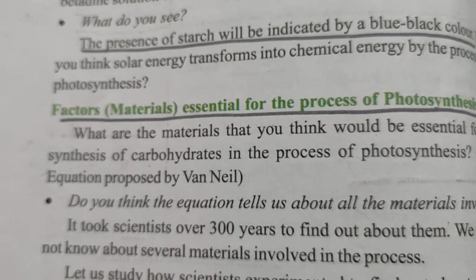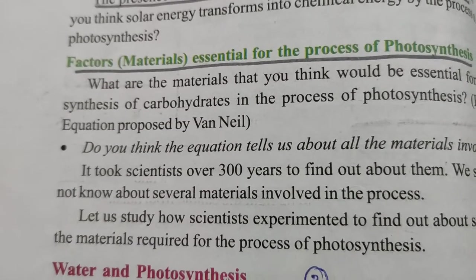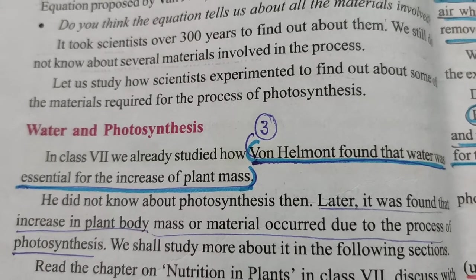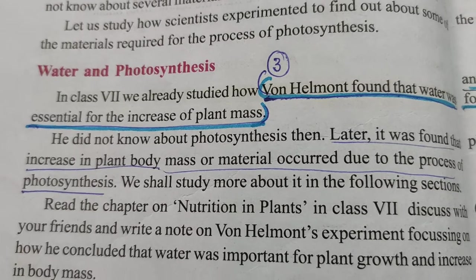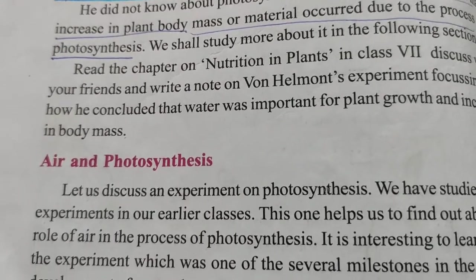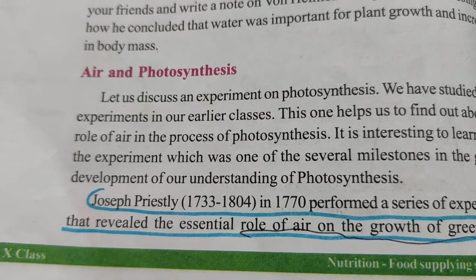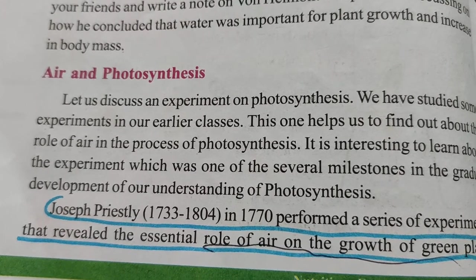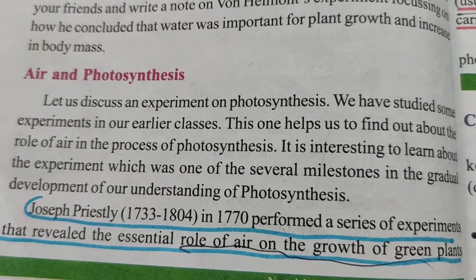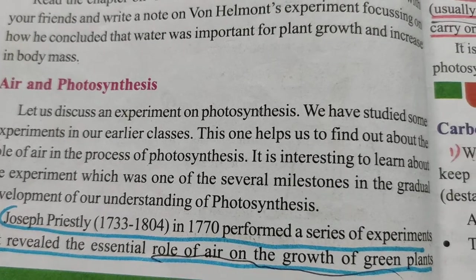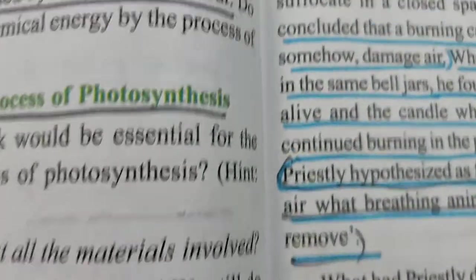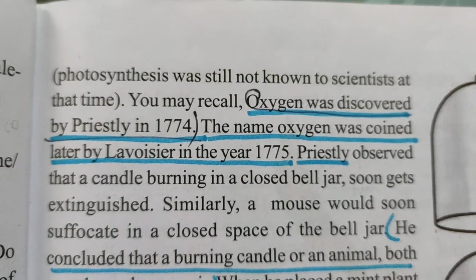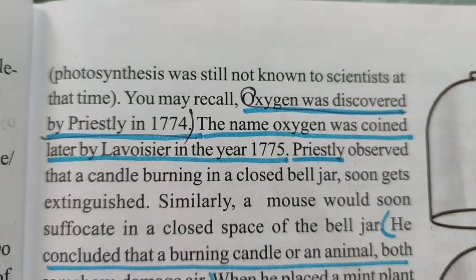The factors essential for photosynthesis: Van Helmont found that water was essential for the increase of plant mass. Oxygen was discovered by Priestley in 1774; the name oxygen was coined later by Lavoisier in 1775. Joseph Priestley (1733–1804), in 1770, performed a series of experiments that revealed the essential role of air in the growth of green plants.